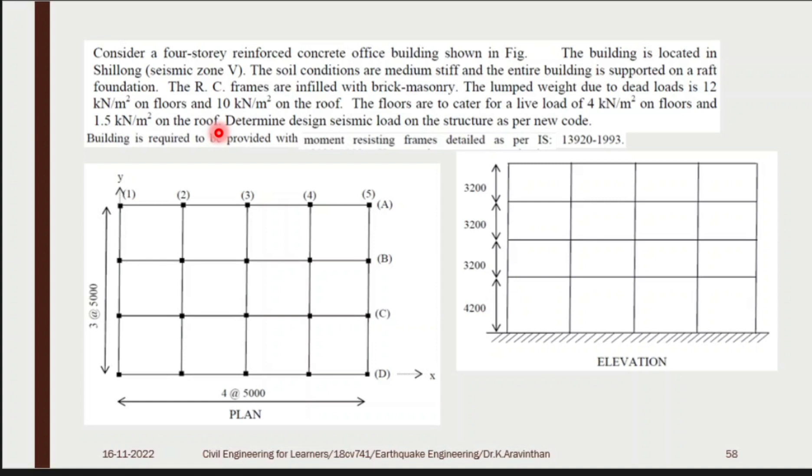So instead of live load they have given in terms of kN/m². So what is the dimension of the building? 20 meter into 15 meter. So each bay carries 5 meter: 5, 10, 15, 20. So 20 meter by 5, 10, 15. So 300 m² is the overall area. If you multiply by live load, 300 into 4 will be 1200 kN at the floor. Live load on a single floor is 1200 kN. This is dead load and 1200 plus you can add the dead load here.